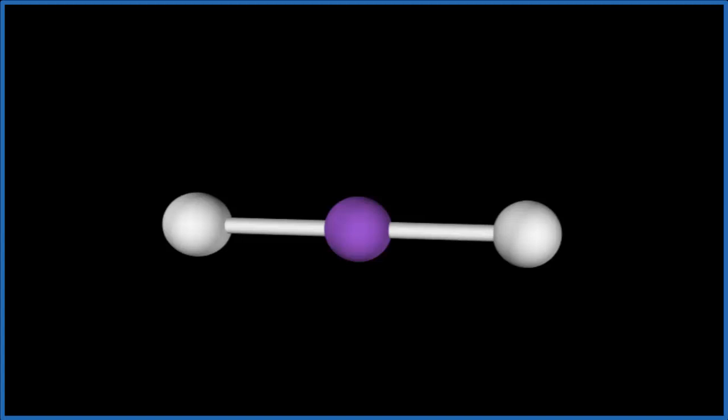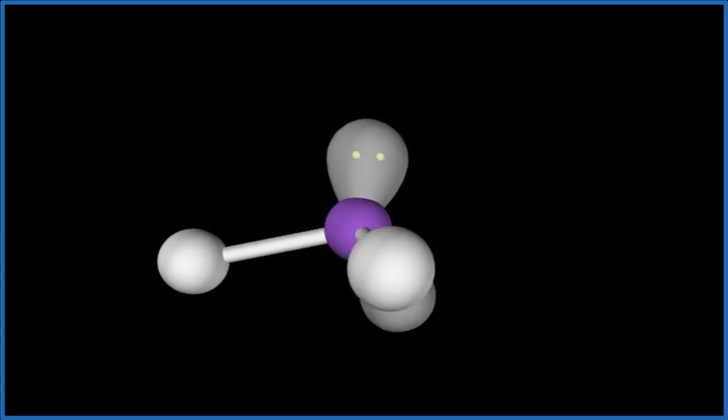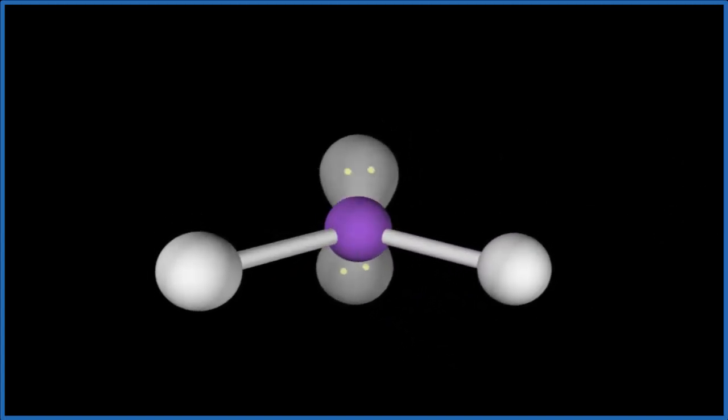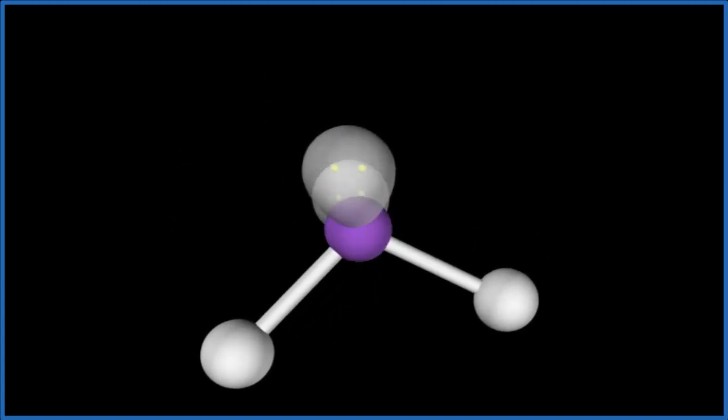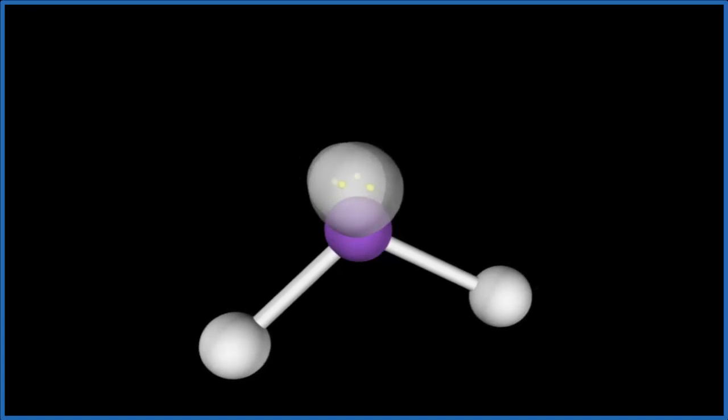And then we'll add our two lone pairs. One, two. So we end up with this molecular geometry here that is bent. So this is a bent molecular geometry for TeBr2.